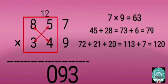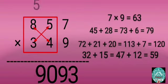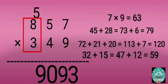Step 4: Multiply 8 by 4 and 5 by 3, then add: 32 plus 15 equals 47. Add 47 and 12 that's carried forward: 47 plus 12 equals 59. Write 9 before 0 and carry forward 5.